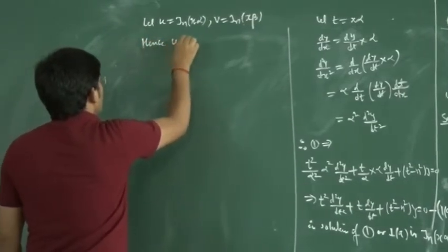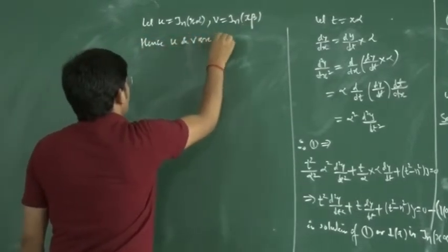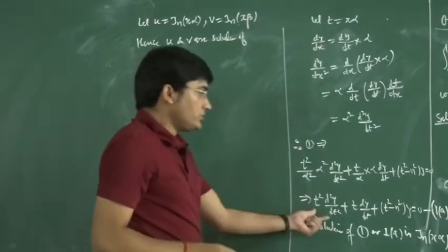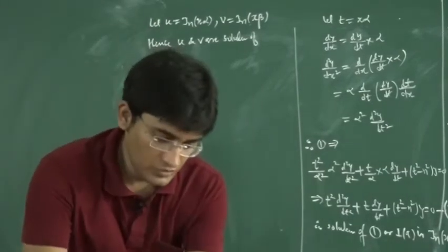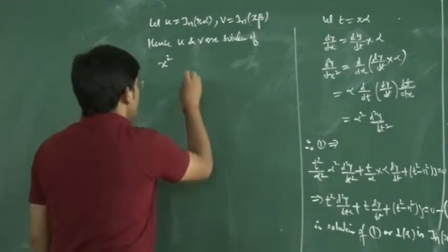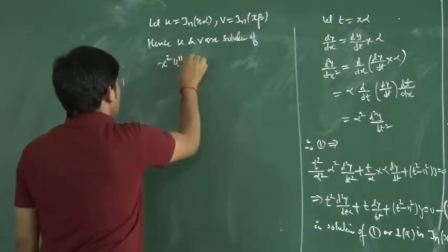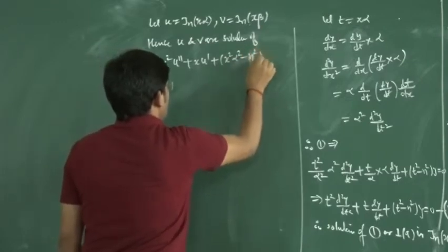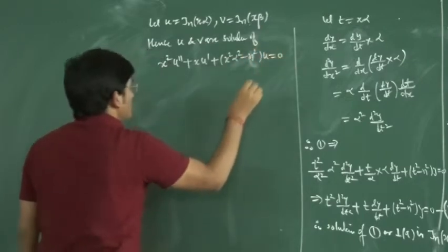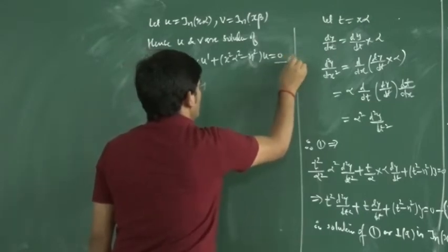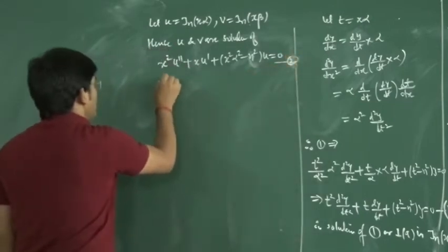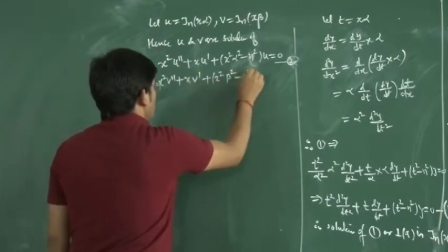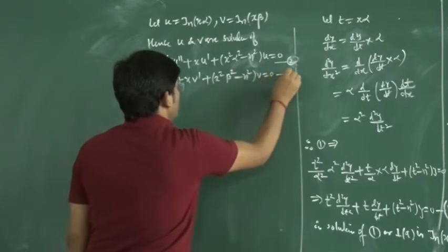Since u and v are solutions: u satisfies x²u'' + xu' + (x²α² − n²)u = 0 — call this equation 2. And v satisfies x²v'' + xv' + (x²β² − n²)v = 0 — call this equation 3.